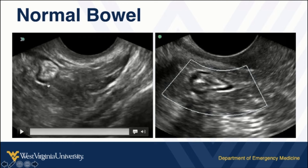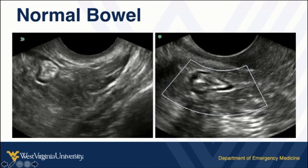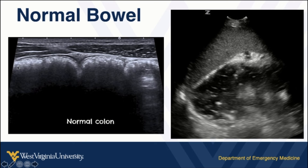Just a couple more examples: again, a bowel signature with that multi-layered adventitia outlining a black outline with the interstitium. Same thing here — we see that black outline, so don't mistake this for a gallbladder, an ovary, or another anatomical structure. This is bowel, and this is one of the ways that bowel can appear with ultrasound. A couple more bowel signatures, this time with a linear probe.